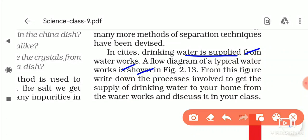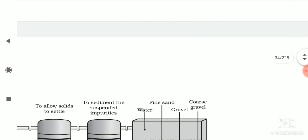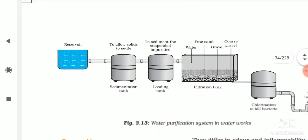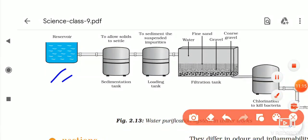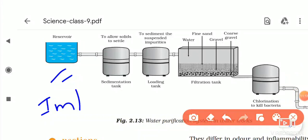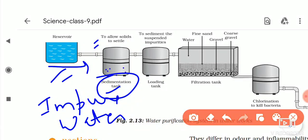From the figure, write down the processes involved to get drinking water supplied to your home from the water works and discuss what technique is used to get pure drinking water. First, in the reservoir there is impure water. This impure water is first allowed into the sedimentation tank.